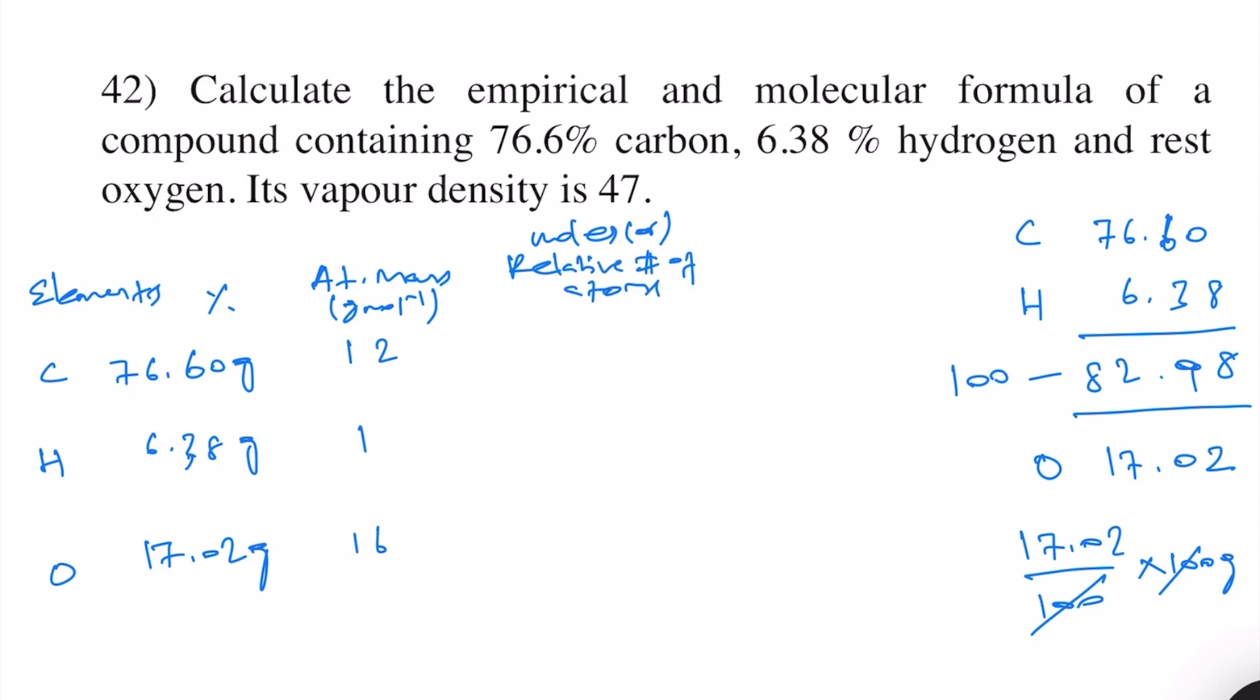What we do is we take the percentage composition and divide by the atomic mass. So 76.60 divided by 12, that will be 6.38. 6.38 divided by 1 will be 6.38. And then 17.02 divided by 16, that will be 1.06.